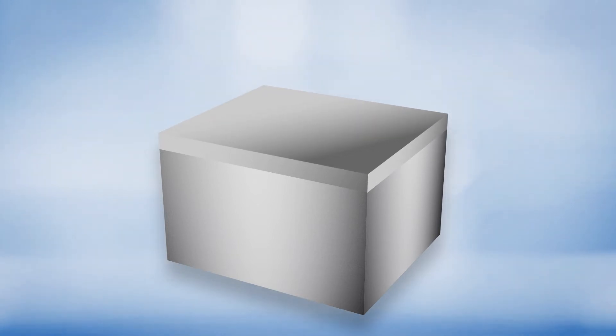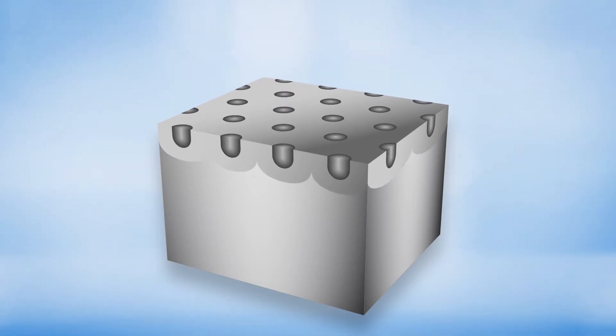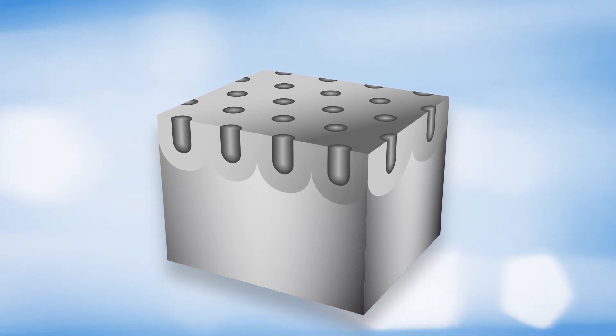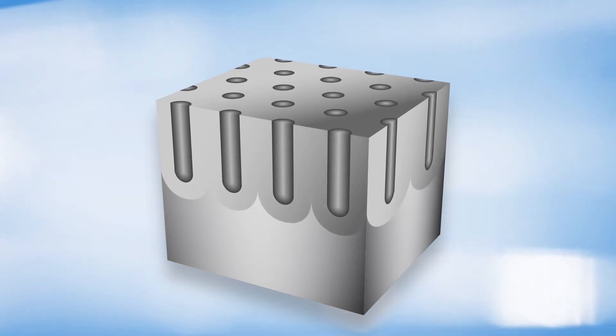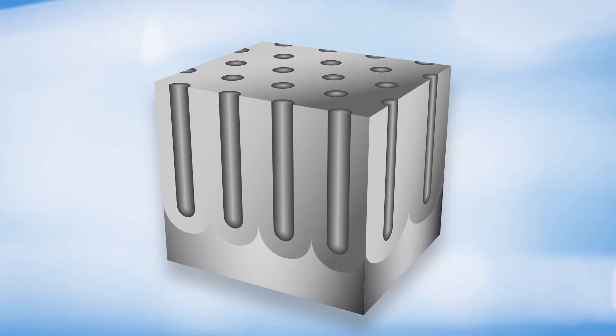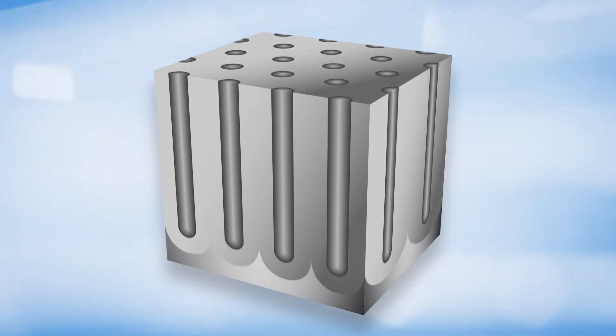When the aluminum oxide barrier layers reach a certain thickness, micropores are generated in the oxide films. If the electrolysis is continued, the aluminum oxide films with micropores continue to grow deep into the aluminum.